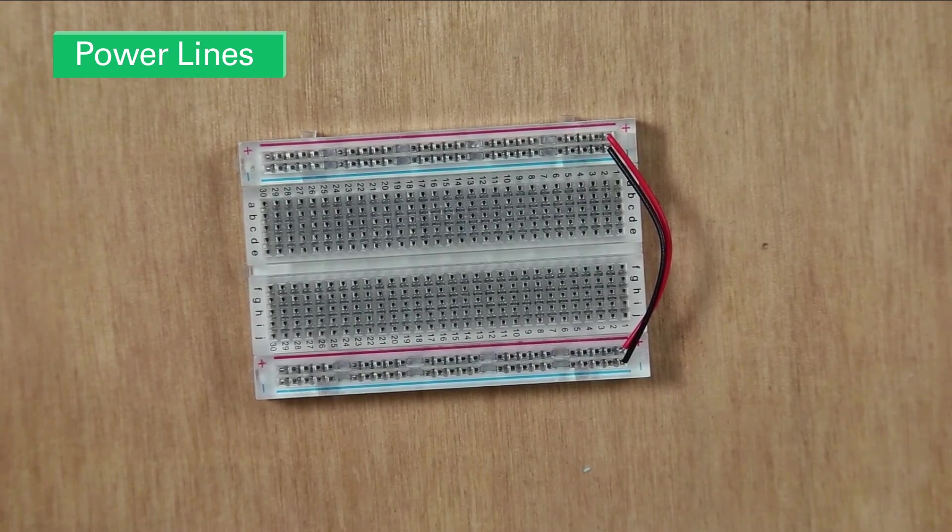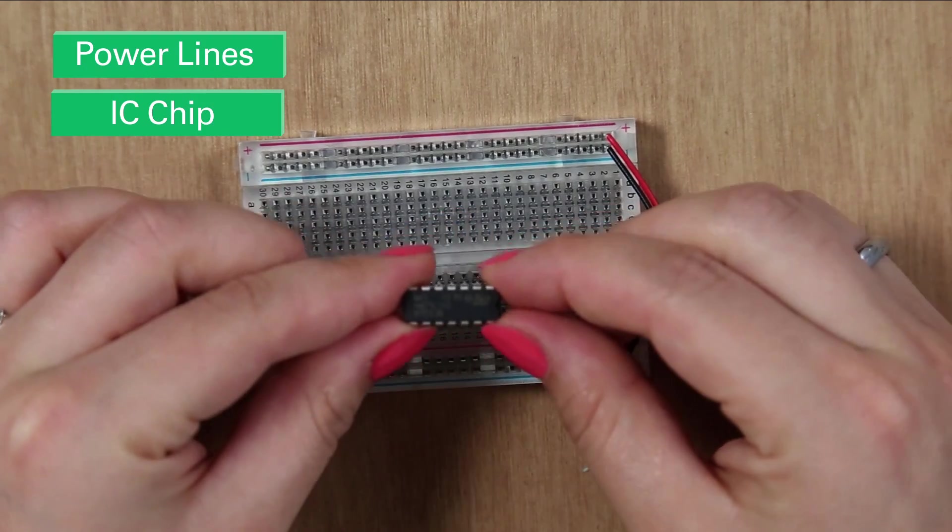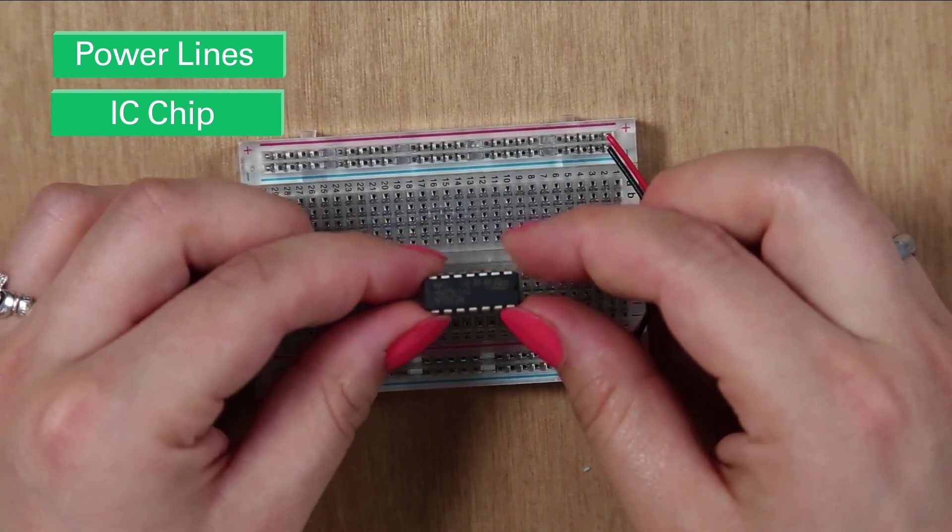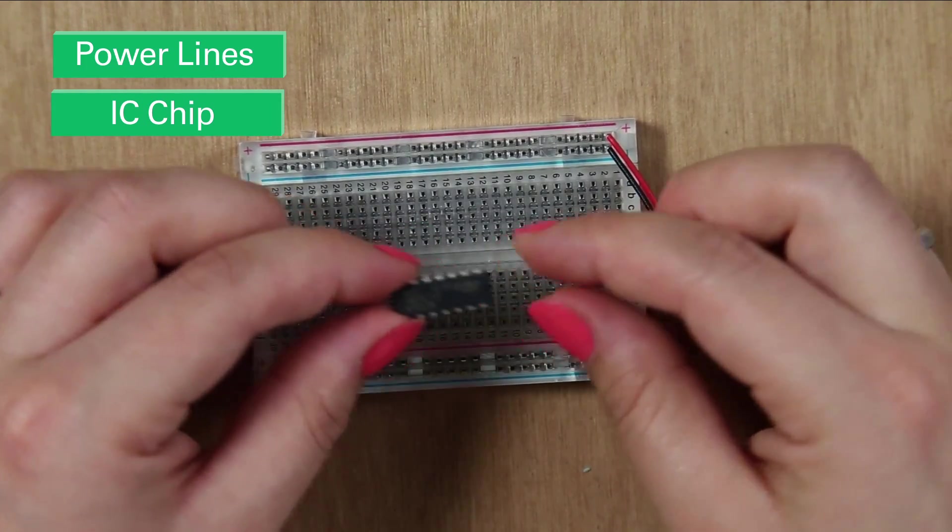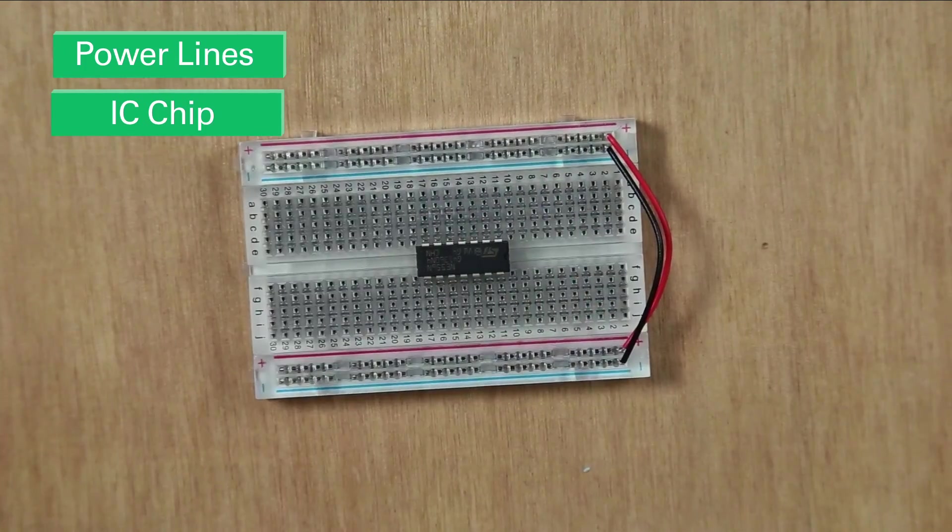So the next bit is the IC chip. This is called the 566 timer and it's called IC because it means integrated circuit. So it's pretty much a mini circuit that's made out of silicon. So we're going to put that in the middle of the board so you can place everything else around it.